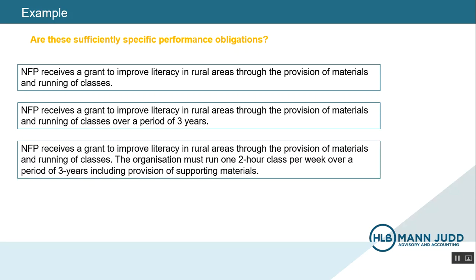Next, we have similar information with the addition of the requirement that the organization must run one two-hour class per week over a period of three years. Is this sufficiently specific? I would say that it is. We still have a time frame of three years, but we also now have a specific requirement to run one two-hour class per week. This would be enough information to be able to allocate the transaction price and determine when the performance obligation is satisfied and thus when revenue should be recognised.